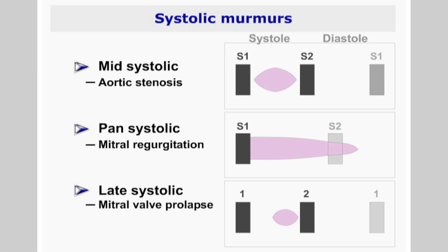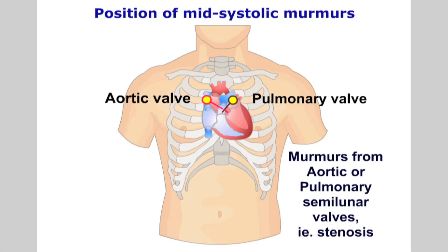If you identify a systolic murmur but are unsure of the precise timing, record your findings so that further investigations can be carried out on subsequent referral. A mid-systolic murmur points to a problem with the aortic or pulmonary semilunar valves, such as stenosis. A pan-systolic murmur occurs when blood is backtracking or regurgitating back through the atrioventricular valves — that is, either the mitral or tricuspid valves.